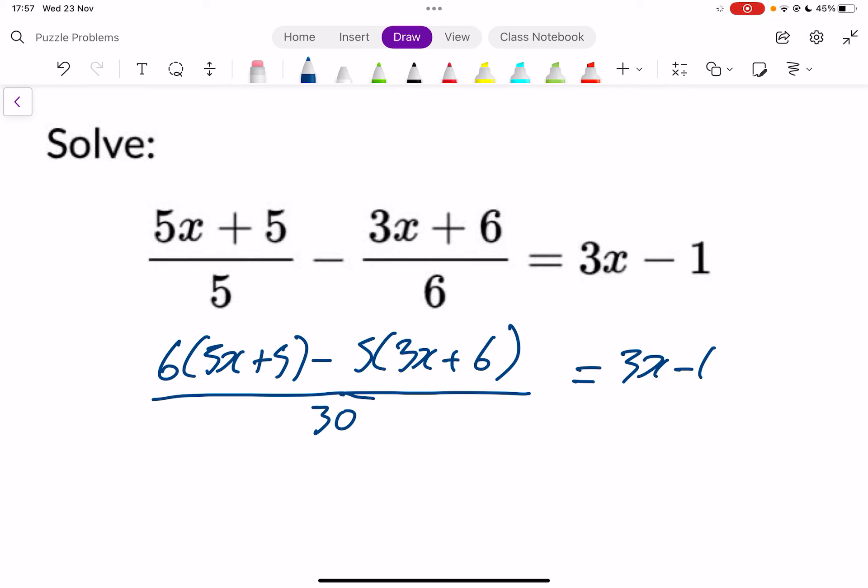Now, this is where you can do the next bit in a couple of ways. What you could do is multiply out this and then tidy it all up, and then multiply across by 30, or you could change the order. You could multiply across by 30 first. So I might do that first just to get rid of it. So I've got 6 times (5x plus 5) minus 5 times (3x plus 6) on the top line. And then this 30 multiplies across, so 30 times (3x minus 1).